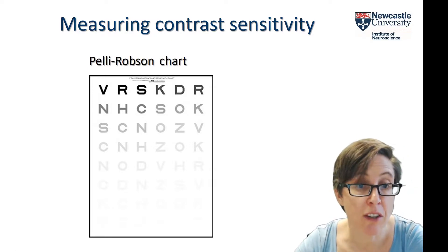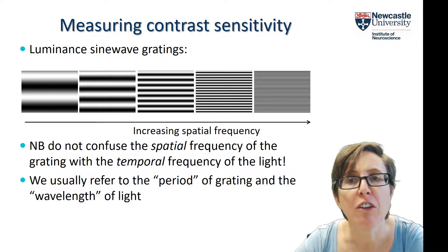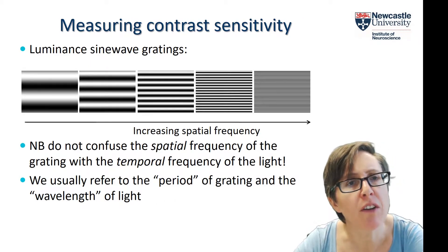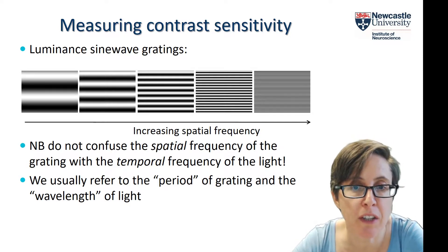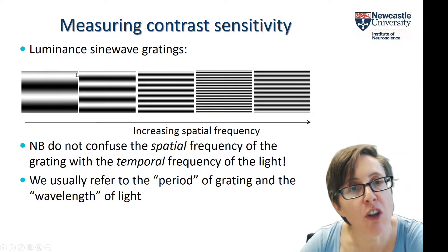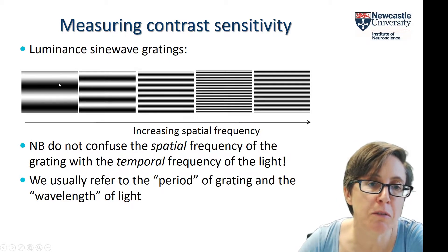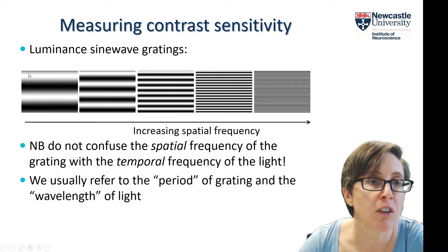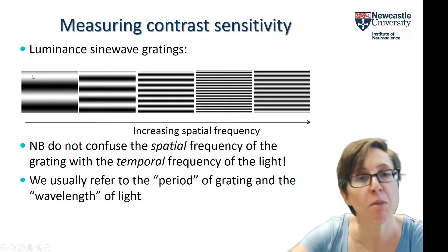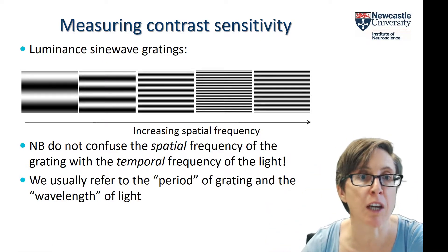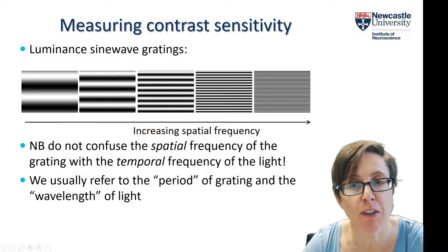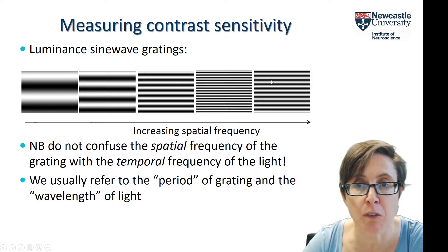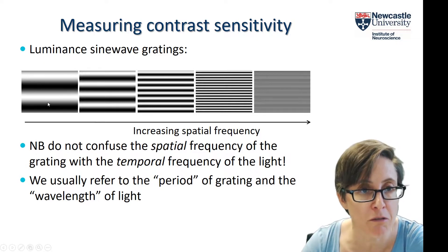That's how contrast sensitivity is often measured clinically, but in vision science we tend to do it a different way — we use luminance sine wave gratings. It's a pattern of luminance varying sinusoidally across the image, going from bright to dark to bright to dark, so the luminance goes up and down like a sine wave. From left to right these are sine wave gratings with increasing spatial frequency — high frequency has more stripes per unit space than the low frequency ones.